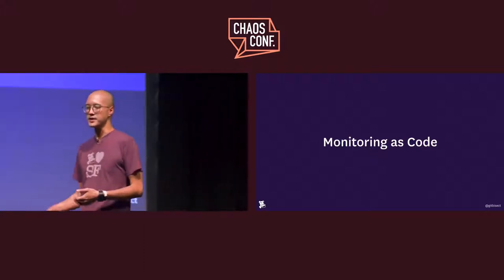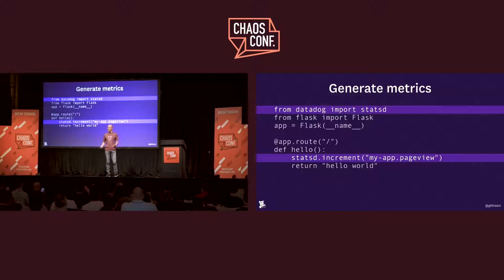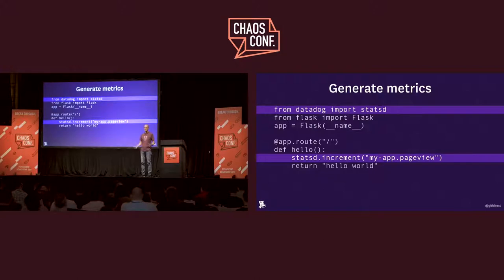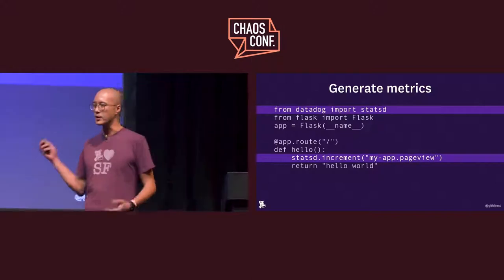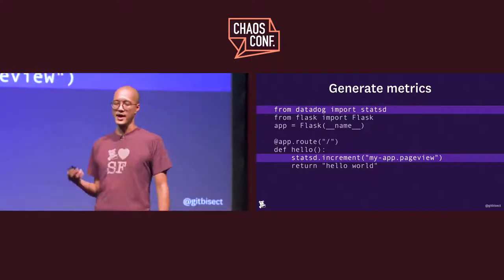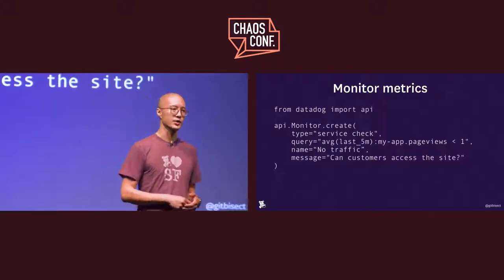If we start thinking about this — if I'm a developer writing a new feature, I'm writing that requirement, I should know what sort of metrics I need to emit. And it's pretty easy to emit metrics these days, whether you're using Datadog or some other tool. You include some library, you call a function, have it increment a number, have it set a rate or a gauge. It's not that hard.